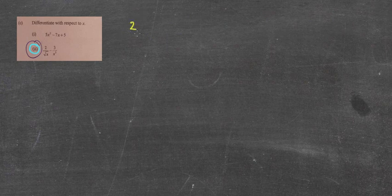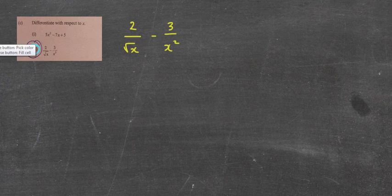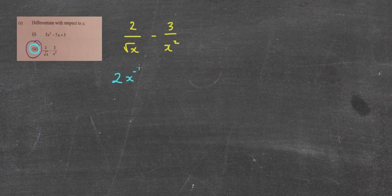The first one we're looking at is 2 over the square root of x minus 3 over x squared. Before I even look at differentiating this question, I'm going to write these without having a divide by root x and a divide by x squared. I'm going to write them with negative indices and fractional indices. So I'm going to put 2x to the power of negative 1 over 2 minus 3x to negative 2.